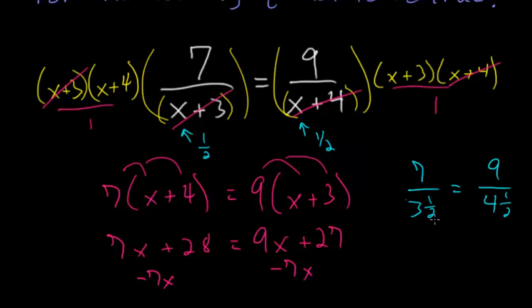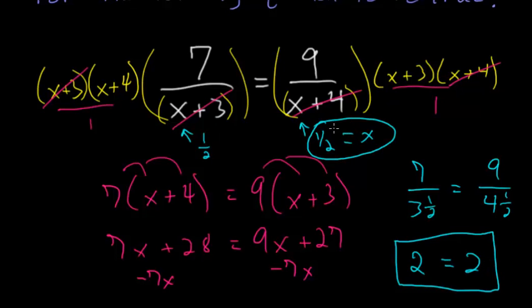Notice that since 3 and a half is just half of 7, 7 divided by a number that's half of it is just 2. And the same thing will be true on the right, since 4 and a half is just half of 9. So 9 divided by a number half of it is also equal to 2. Since we got the same answer on each side, we know that our answer of 1/2 for x is the correct answer.